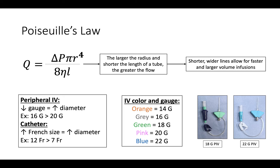Poiseuille's law explains why a 16- or 18-gauge peripheral IV is an excellent choice in almost all patients for initial resuscitation, because these IVs are relatively wide, very short, and easily placed.